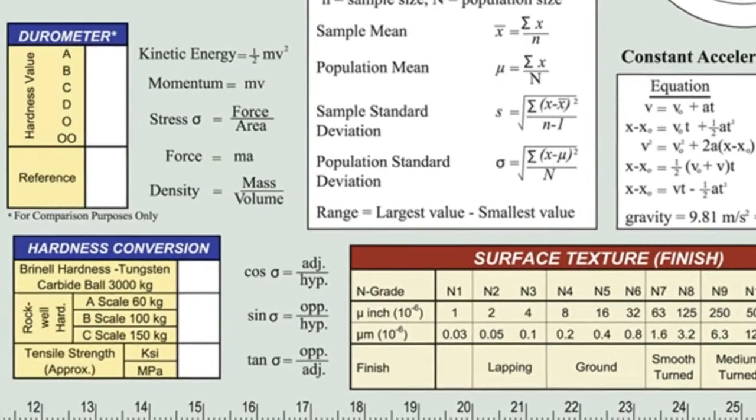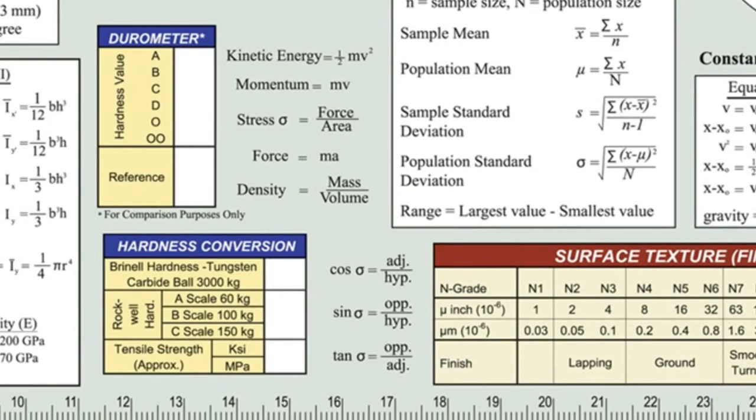Formulas for kinetic energy, momentum, stress, force, density, as well as sine, cosine, and tangent are just to the left of those in the middle of the chart.